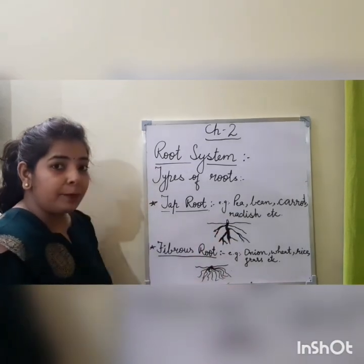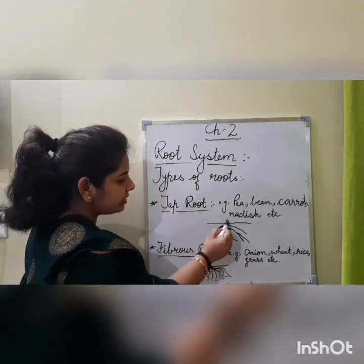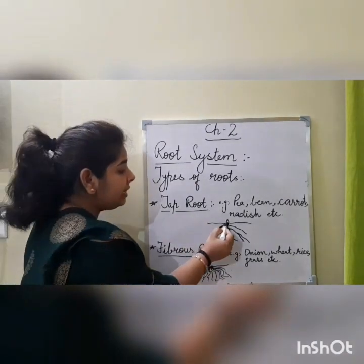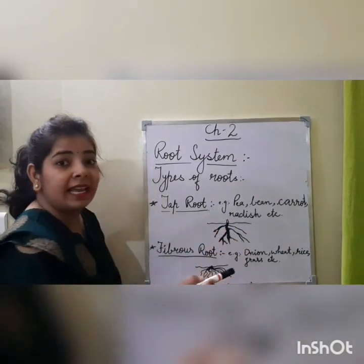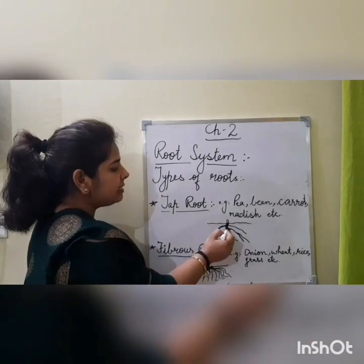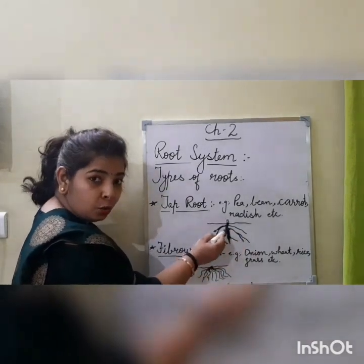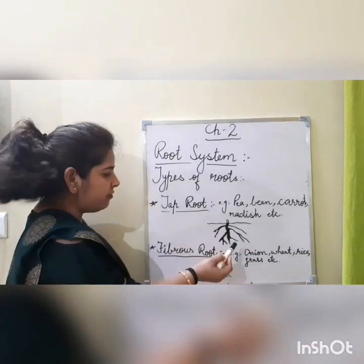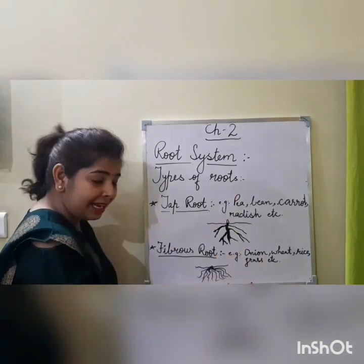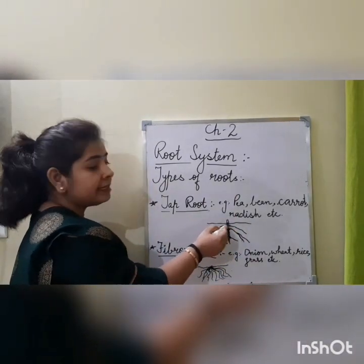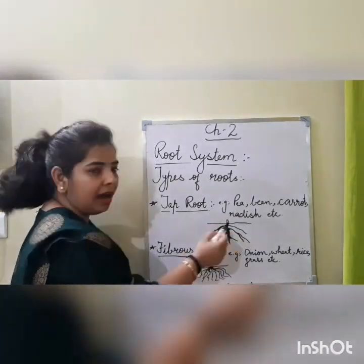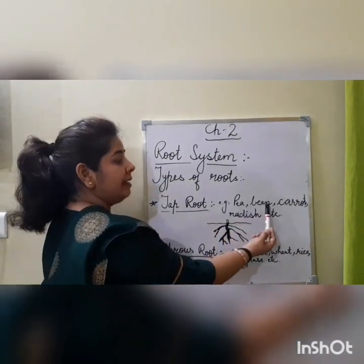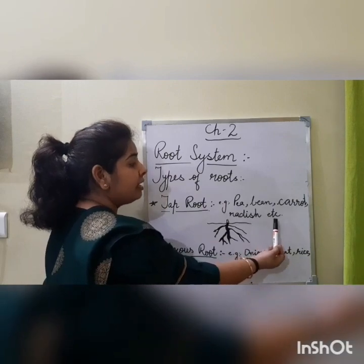Tap root is the root which grows straight down into the ground. There is one main root which goes straight down, and from it thinner secondary roots come out. This type of root is known as tap root. Examples of tap root are pea, bean, carrot, radish, etc.